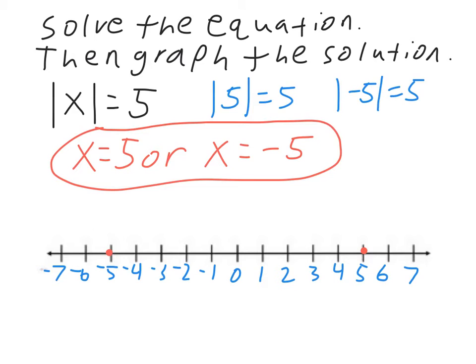So just remember: whenever you have an absolute value, you'll have two answers — one where it equals the positive number, and one where it equals the negative number.